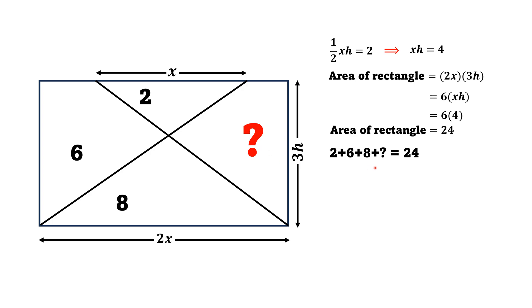If we subtract 2, 6, and 8 from 24, that gives us 8. Thus this unknown area is 8 square units.